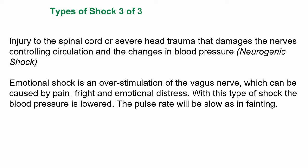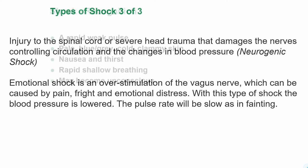There's also emotional shock, which is an overstimulation of the vagus nerve. This can be caused by pain, fright, and emotional distress. With this type of shock, the blood pressure is lowered and the pulse rate will be slow, as in fainting.